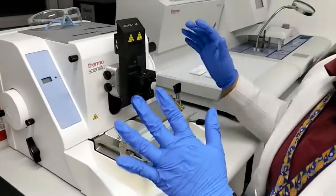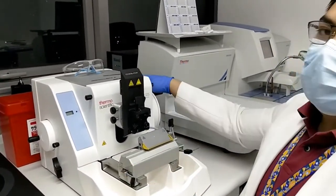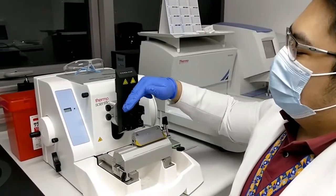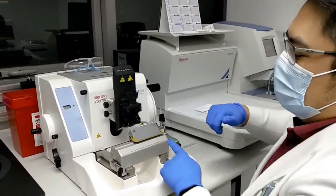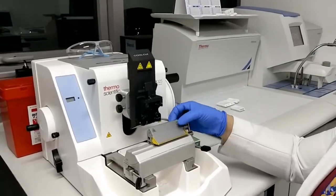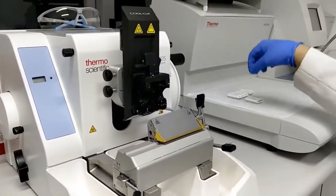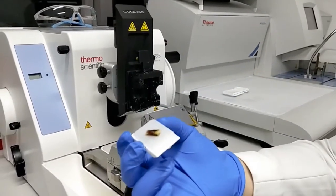In microtomy, we have different parts. We have the rotary wheel, we have the block holder, and then we have the blade holder. The blade holder holds our microtome blades. The block holder holds our tissue blocks. As you can see, we're placing the block there.